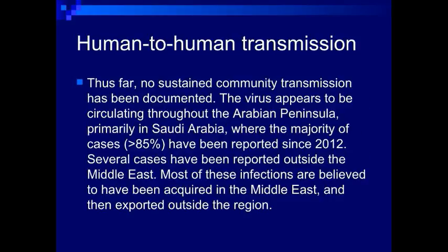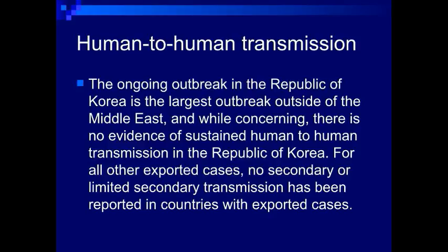Thus far, no sustained community transmission has been documented. The virus appears to be circulating in Saudi Arabia, where the majority of cases — more than 50% — have been reported since 2012. Several cases have been reported outside the Middle East; most of these infections are believed to have been acquired in the Middle East and then exported. The ongoing outbreak in the Republic of Korea is the largest outbreak outside the Middle East, though there is no evidence of sustained human-to-human transmission there. For all other exported cases, no or only limited secondary transmission has been reported.